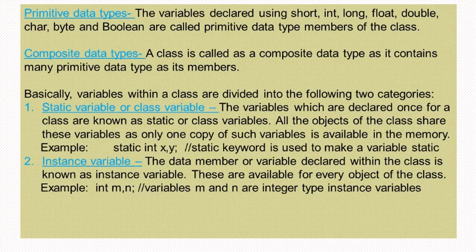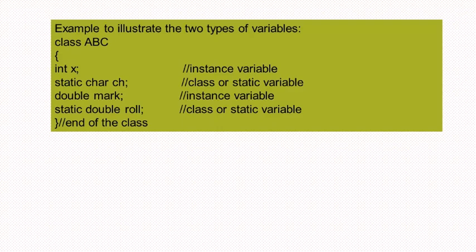Instance variables are the data members or variables declared within the class without the static keyword. These are available for every object of the class. For example, int mn — since no static keyword is used, it is called an instance variable. In the example class abc, instance variable x, a static char variable ch, instance variable mark of double type, and a static double variable role have been declared. The only difference between static and instance variables is the presence of the static keyword.